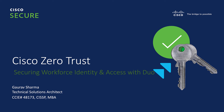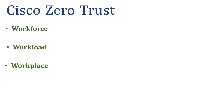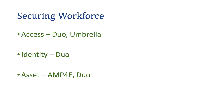Hey guys, this is Gaurav Sharma and today we're going to be talking about how Cisco Duo helps securing the workforce identity and access under the Cisco Zero Trust architecture. In the previous video we talked about Cisco Zero Trust and how it's divided into three categories: workforce, workload, and workplace. Today we're going to be talking about securing your workforce — what does it mean and how do we secure a workforce.